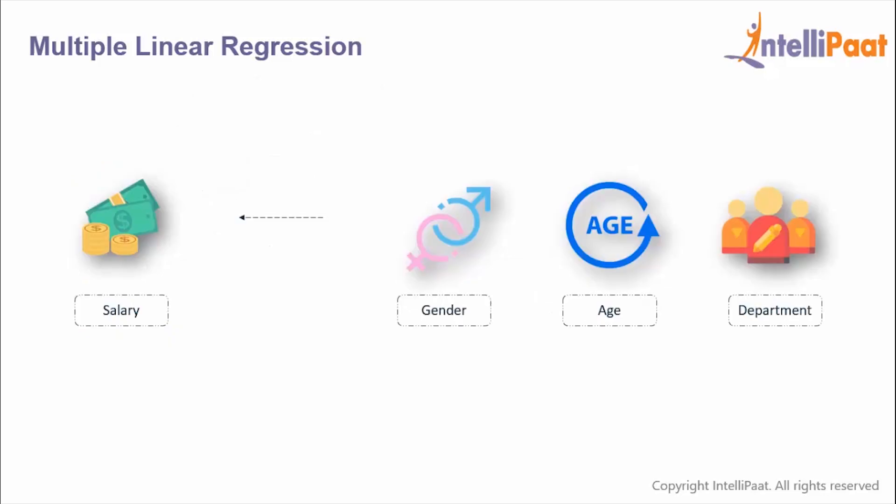Let's take an example for a better understanding of multiple linear regression. Here we are trying to understand what factors affect the salary of an employee. Salary is the dependent variable and gender, age, and department are the independent variables. This linear regression model helps us determine the salary of an employee when specific values are given to age, gender, and department.